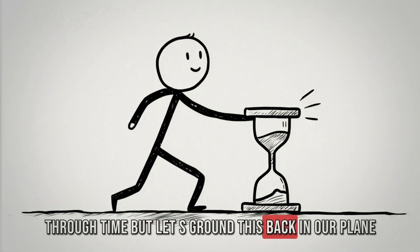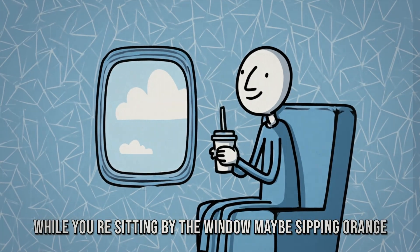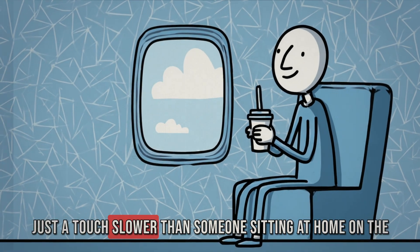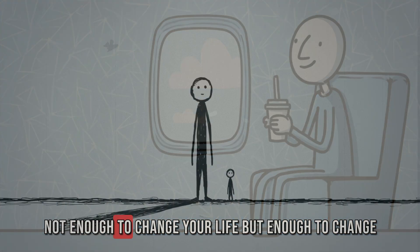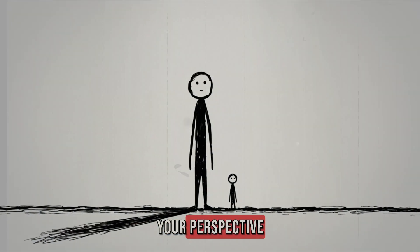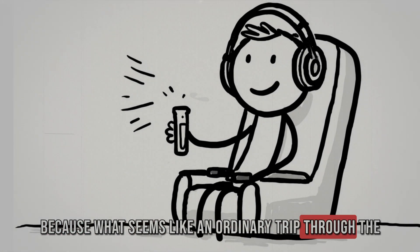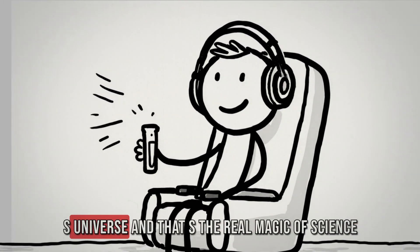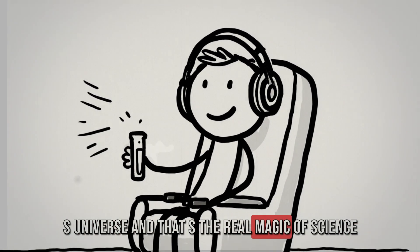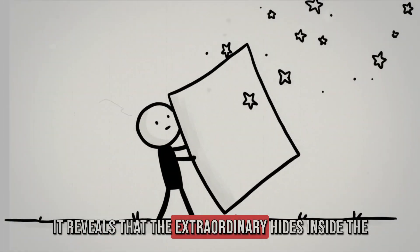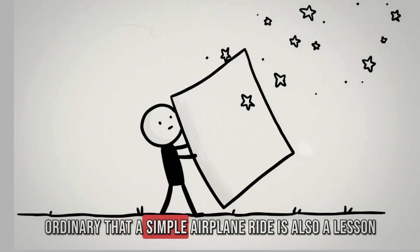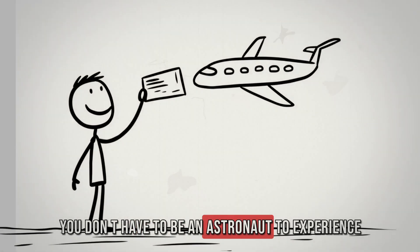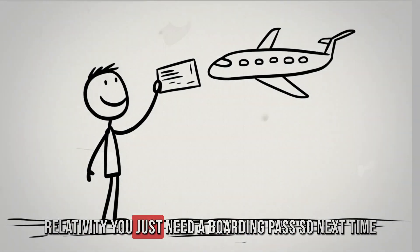But let's ground this back in our plane. While you're sitting by the window, maybe sipping orange juice and watching clouds drift by, your body is aging just a touch slower than someone sitting at home on the couch. Not enough to change your life, but enough to change your perspective. Because what seems like an ordinary trip through the sky is, on a deeper level, a tiny experiment in Einstein's universe. And that's the real magic of science. It reveals that the extraordinary hides inside the ordinary. That a simple airplane ride is also a lesson in the nature of time and motion. You don't have to be an astronaut to experience relativity. You just need a boarding pass.